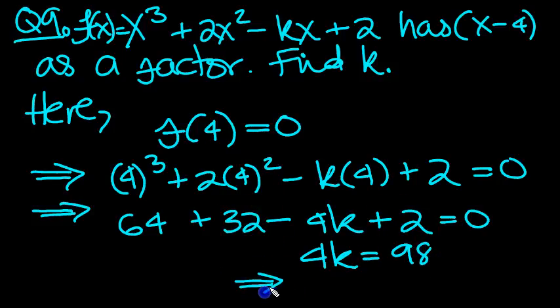So 4k equals 98. K equals then 98 over 4, divided by 2 top and bottom, it will be 49 over 2.